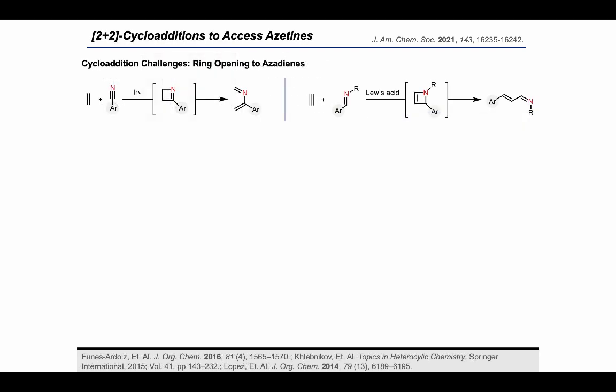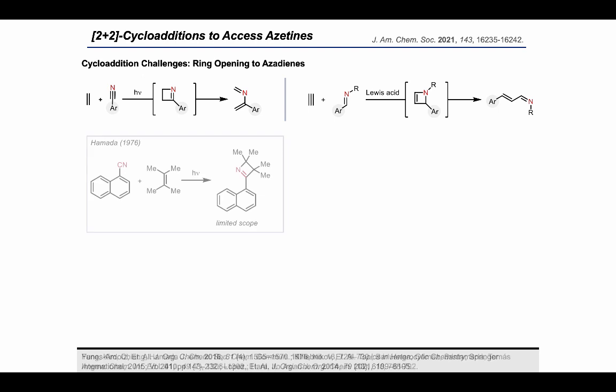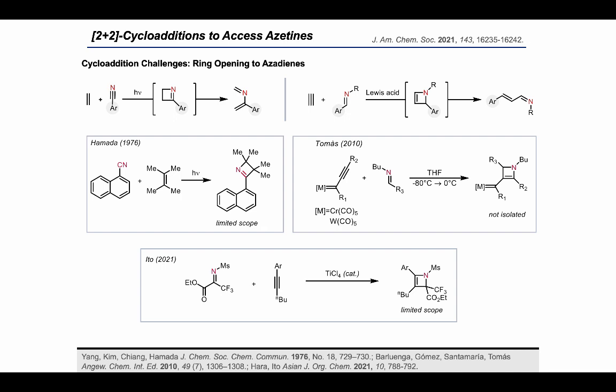Similar to when we think about making azetidines, theoretically the most efficient approach to synthesizing azetines would be a 2+2 cycloaddition between either a nitrile and an alkene or an imine and an alkyne. However, along with the previously discussed challenge of imine isomerization, these methods face the additional challenge of ring opening of the azetine products to the corresponding azadienes, which can be favored under 2+2 conditions as this allows for the release of ring strain. This has led to there being very few methods to form azetines by 2+2 cycloaddition. Existing methods are limited to photochemical-induced reaction of conjugated nitriles, metal-mediated cycloaddition of imines and alkynes, and a Lewis acid-catalyzed imine-alkyne 2+2 cycloaddition published recently in 2021.